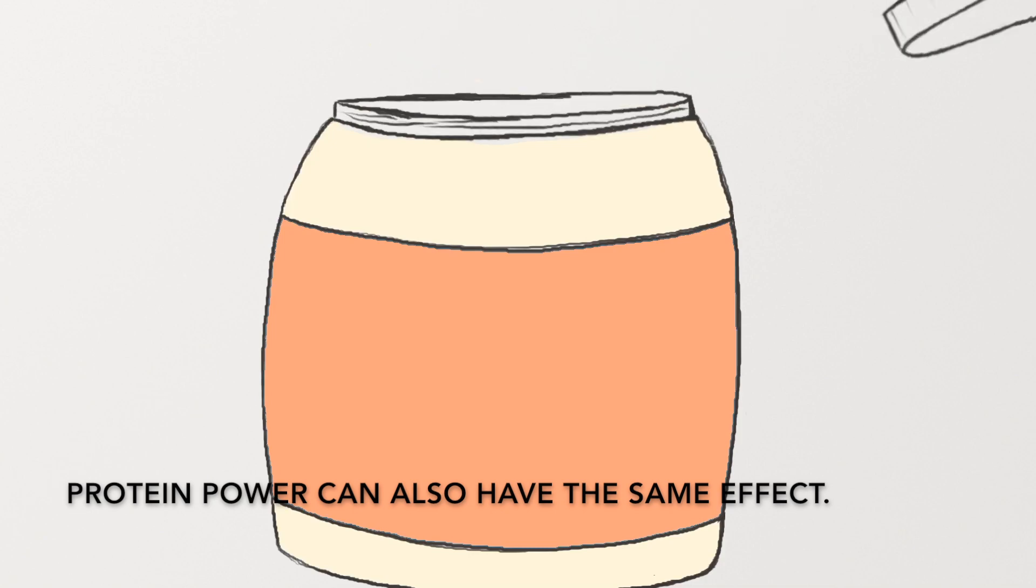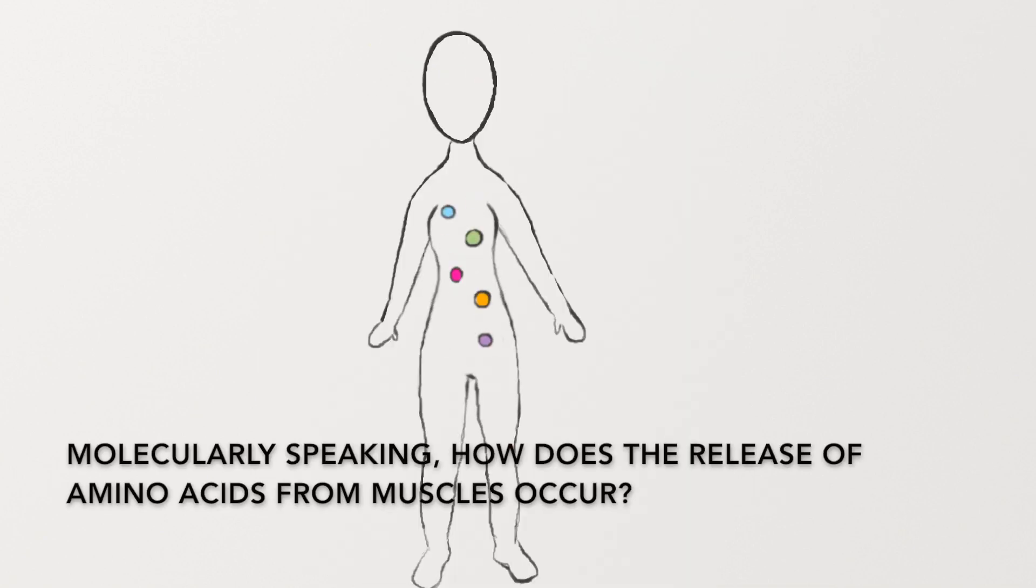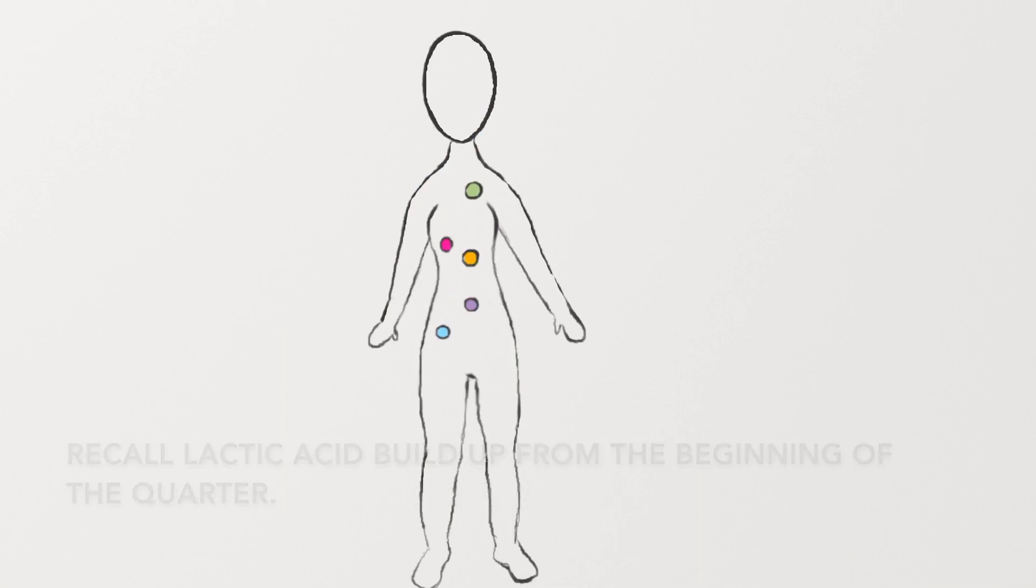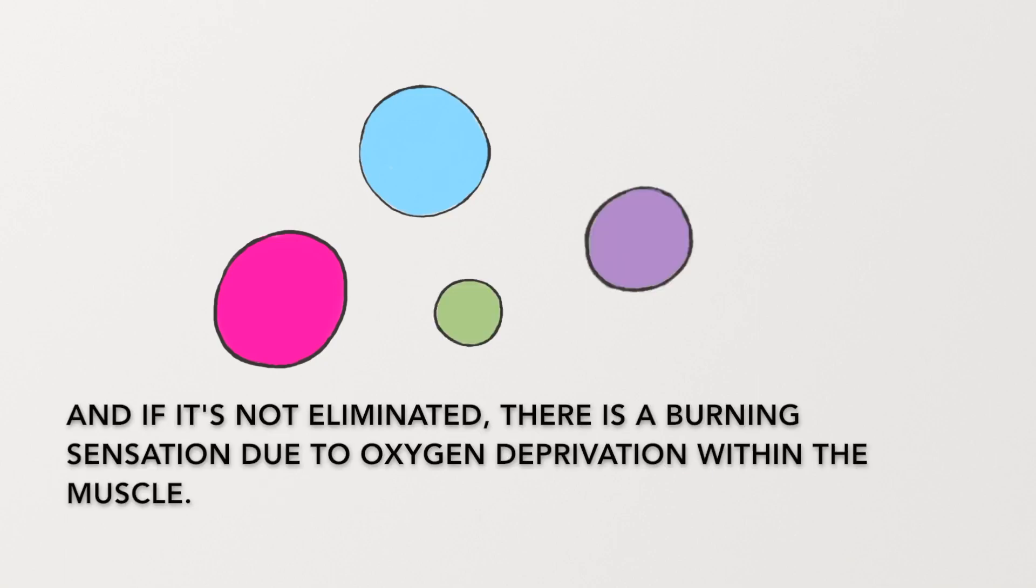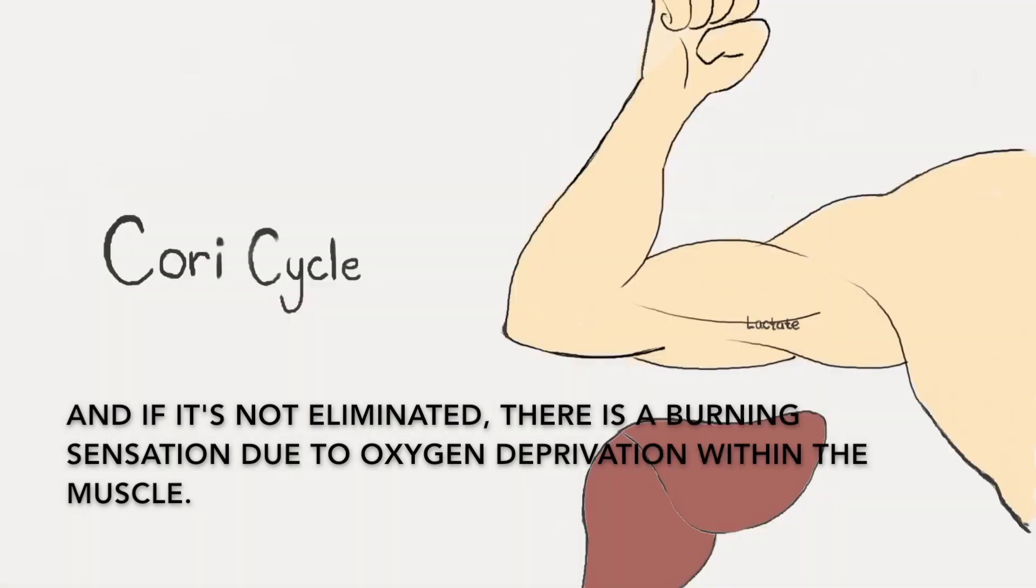Protein powder can also have the same effect. Molecularly speaking, how does the release of amino acids from muscles occur? Recall lactic acid buildup from the beginning of the quarter. If we work out, lactic acid forms through anaerobic means, and if it's not eliminated, there's a burning sensation due to oxygen deprivation within the muscle.